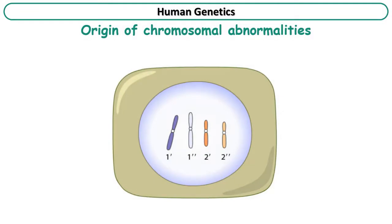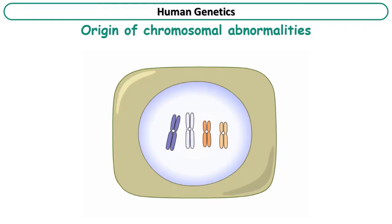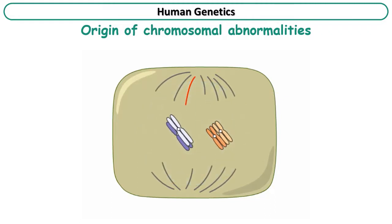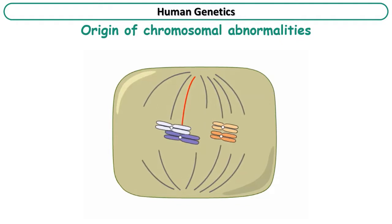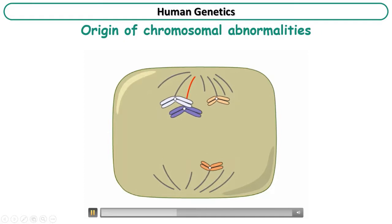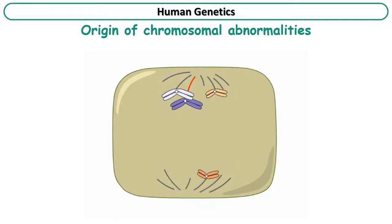In the next section, we will identify the origin of abnormalities that are due to errors in the number of chromosomes. We consider a mother cell of gametes containing two chromosome pairs. Let's examine the phases of meiosis of this cell. We can see that during anaphase I, two homologous chromosomes didn't separate as usual and migrated towards the same pole.